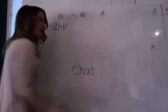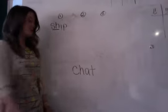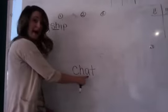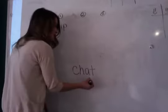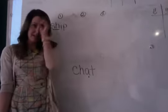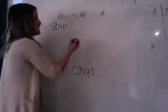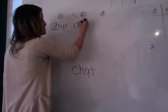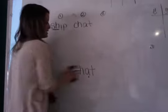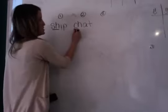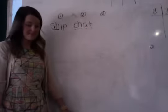Our next word is the word chat. Say chat. Now say the sounds for chat: Ch, A, T — chat. This one letter right here is saying the short A sound. So we're going to say and write chat under our second column. Say and write chat with me: Ch, A, T — chat. Now let's dot and dash: Ch, A, T — chat.